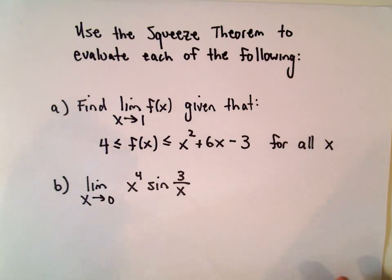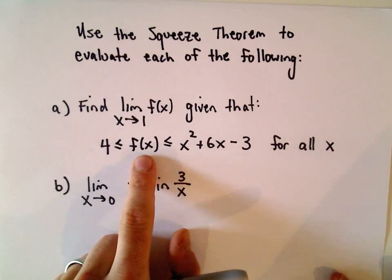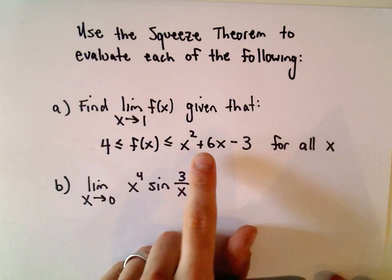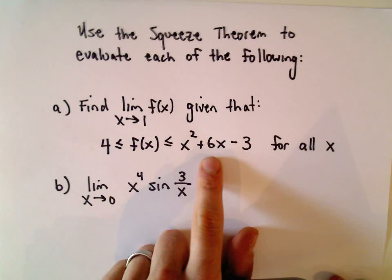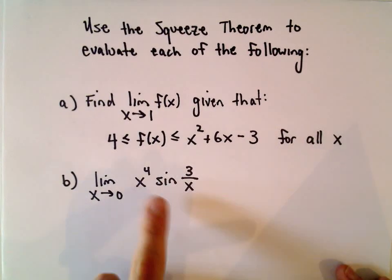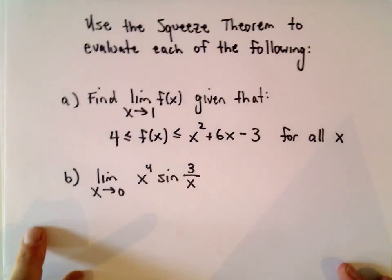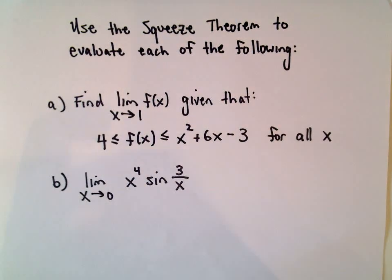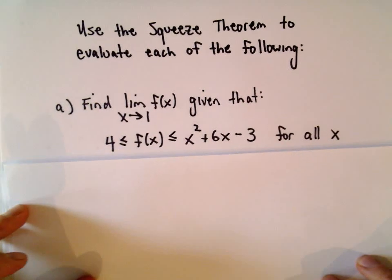Usually the tricky part of the squeeze theorem is taking your function and bounding it below by some function, in this case a constant function, and bounding it above by another function. Here that's given to us, so it's going to make life a little bit easier. In part B, for example, we're going to have to come up with the smaller and the bigger, and that'll make it a little bit trickier.